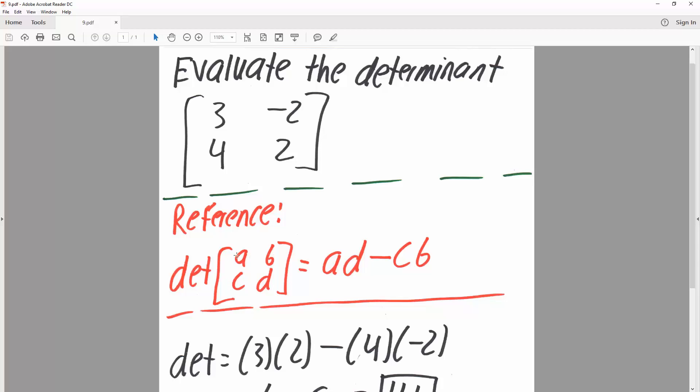So just a repeat: A times D minus C times B. So this diagonal minus this diagonal.